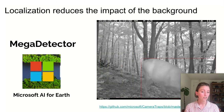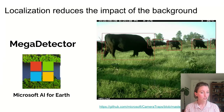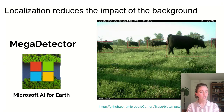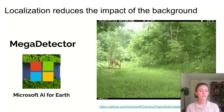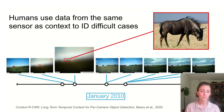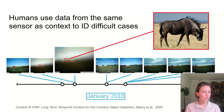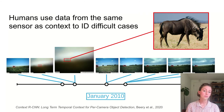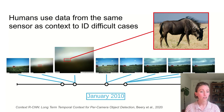However, generalizable species identification has still proven to be challenging, particularly for rare species or poor quality data. Humans use data from the same sensor as context to help them identify difficult cases. Here we can see how an expert used alternate images to help identify a wildebeest that was hidden in fog.